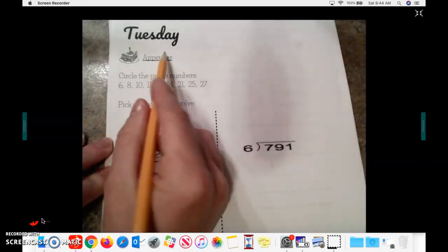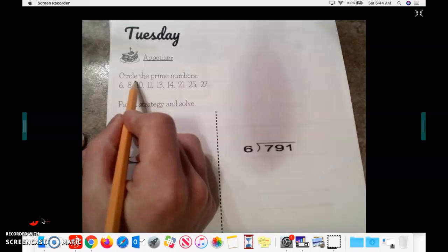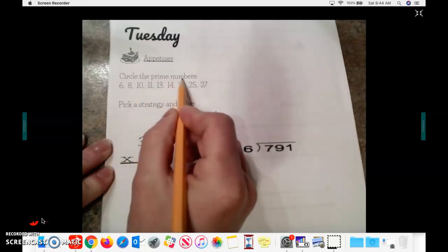Alright friends, today, Tuesday's appetizer, we again are going to be circling the prime numbers. And like I said yesterday, a prime number is any number that only has 1 and itself as factors.